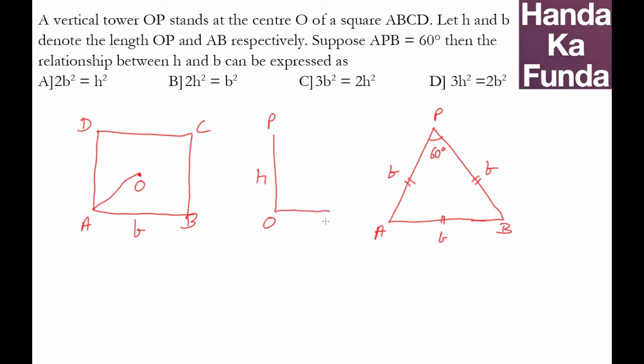I have the value of the height of the tower as H OP. AP I just found out from the equilateral triangle is B. How much will be OA? Well, the diagonal, the full diagonal for a square will be B root 2, so half of that, OA will be B by root 2.